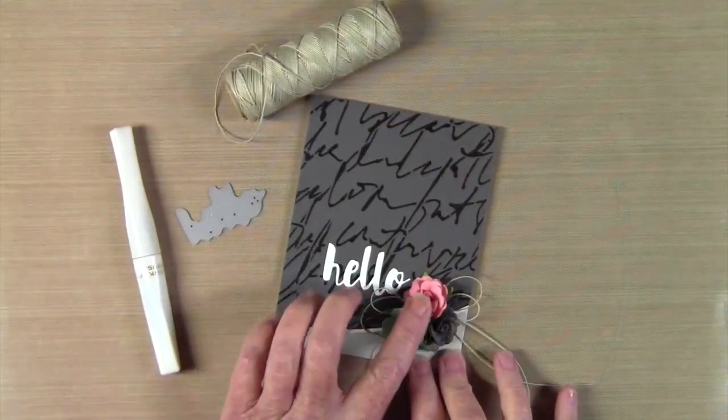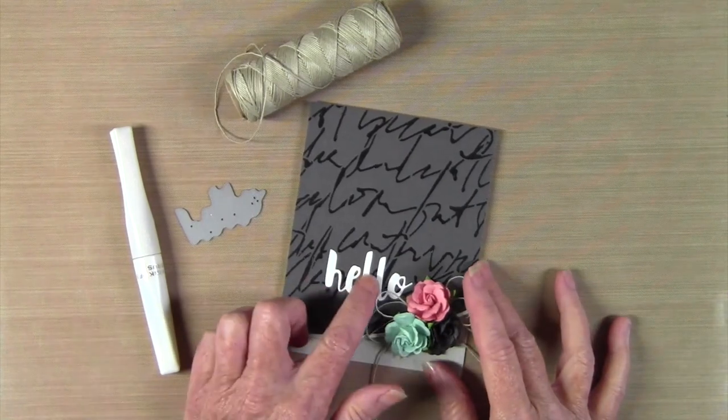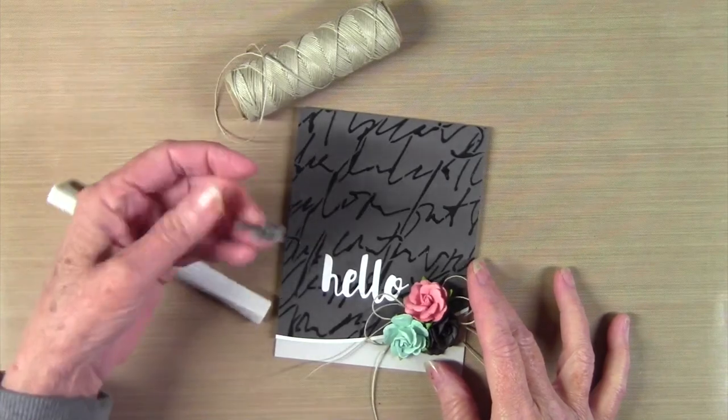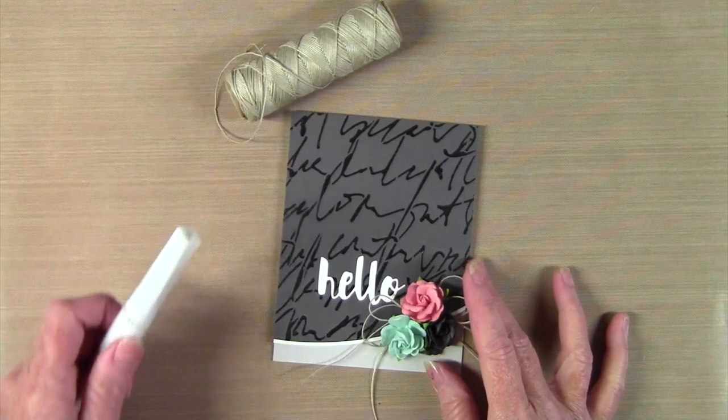I've decided to keep my embellishment simple, so I've added three prima flowers and a twine bow. And also I've die cut the Hello from Simon Says Stamp Hello die. It's a painted Hello, so it's a really nice bold white.